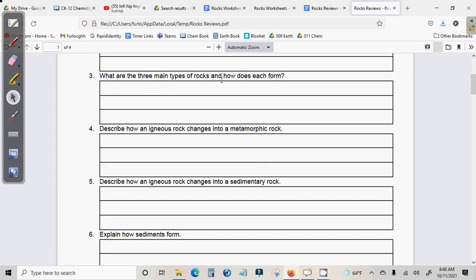What are the three main types of rocks and how does each one form? Describe how an igneous rock changes into a metamorphic rock. Describe how an igneous rock changes into a sedimentary rock.